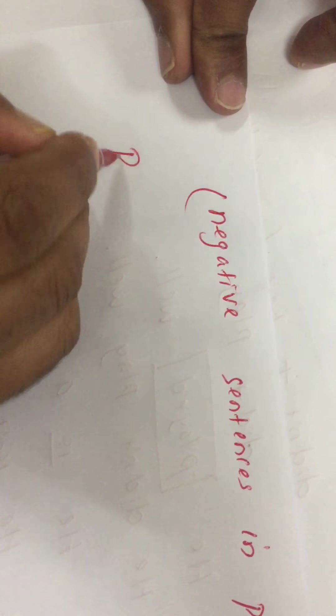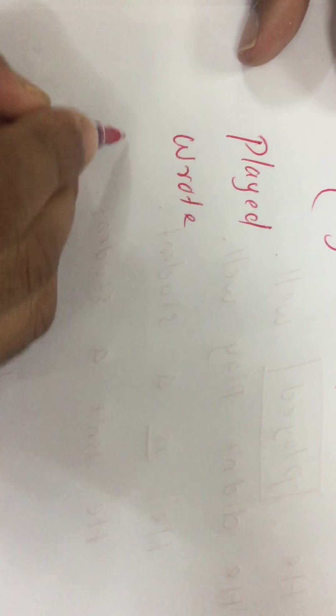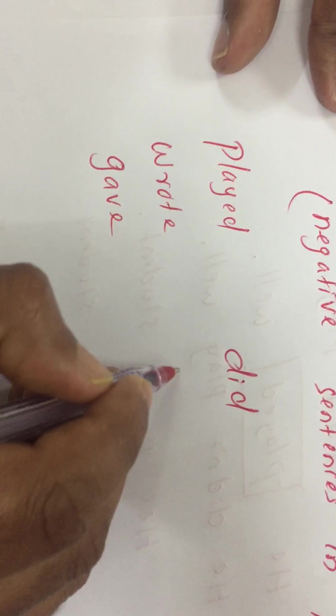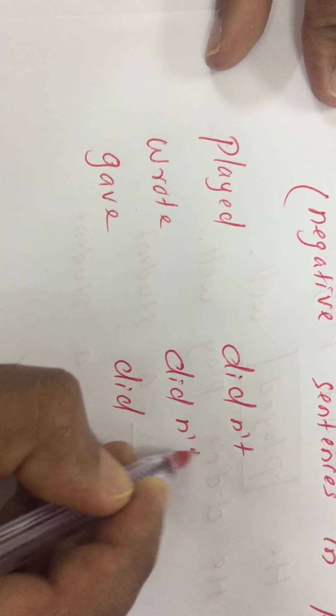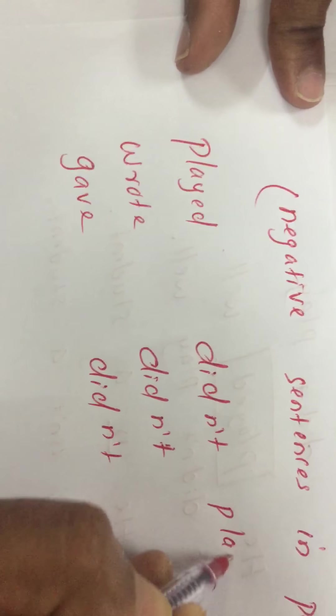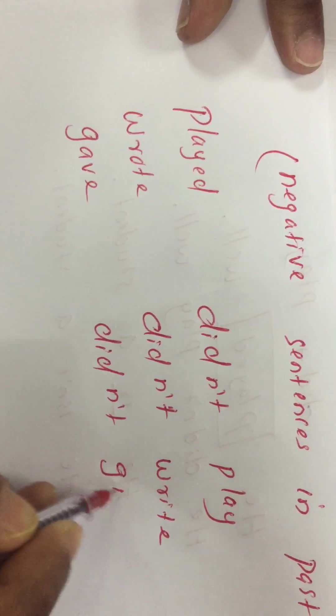Just to revise: to make negative sentences in simple past, consider the verb — played, wrote, or gave. Then add 'did,' after that add 'not' — so 'didn't.' Then use the base form of the verb: didn't play, didn't write, and didn't give.